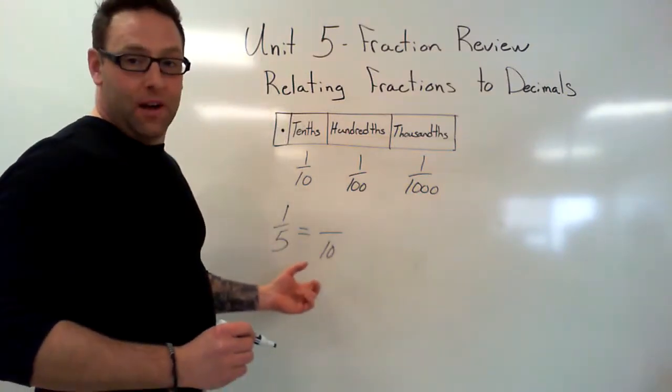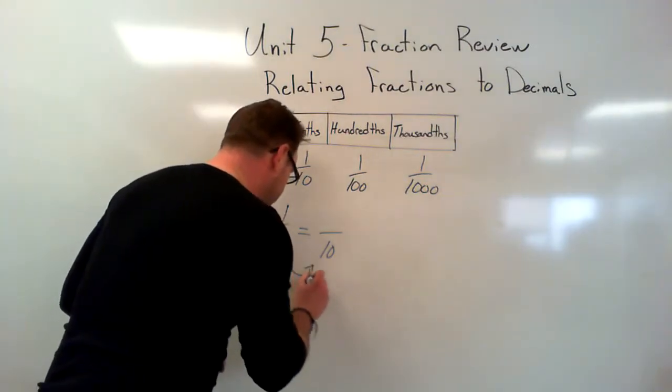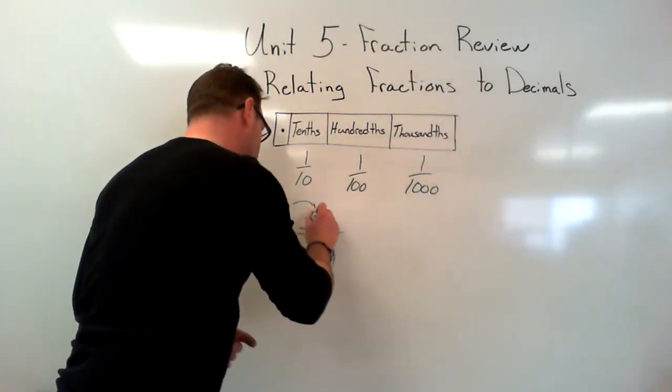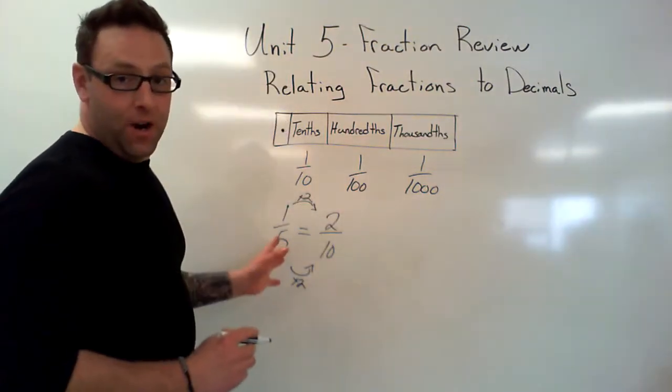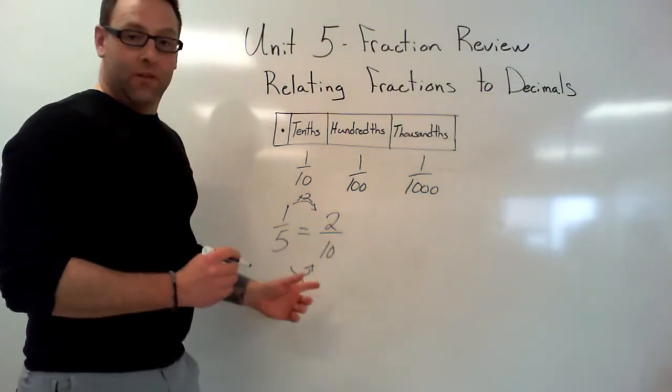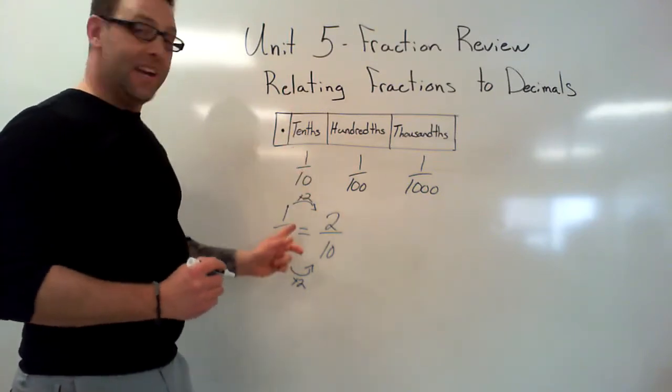How did I get from 5 to 10? You got it: times 2. 1 times 2 is 2. My fraction, the equivalent fraction, is 2 over 10. Now we have this place value right here: tenths.